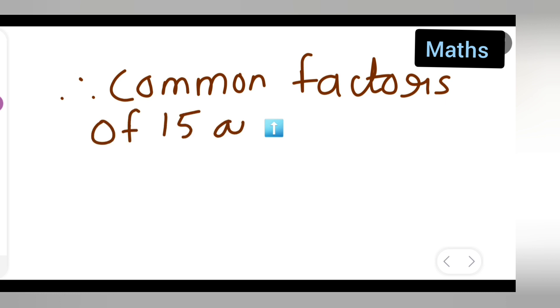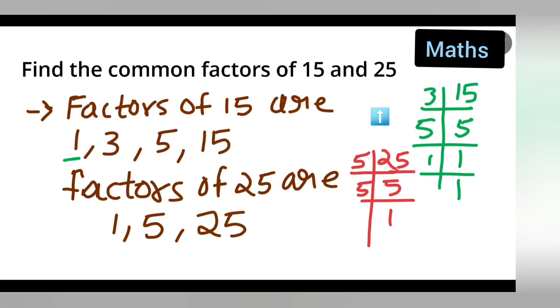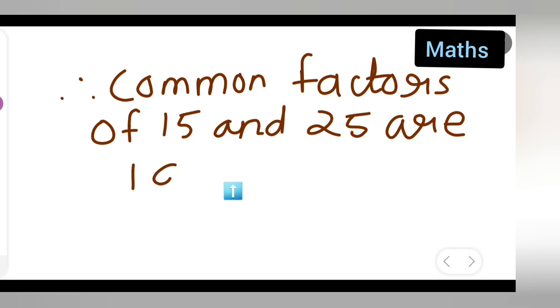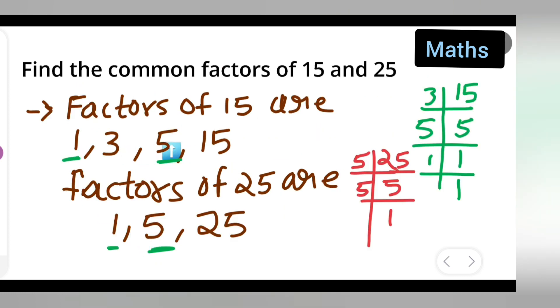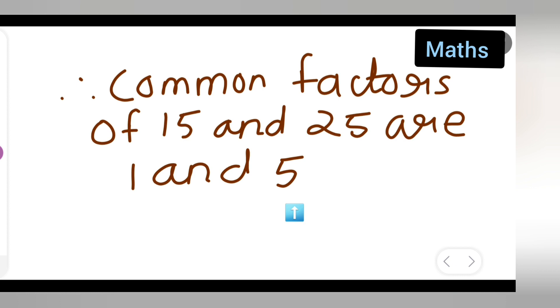So therefore you can write down here: therefore common factors. Now what are the common factors of these two? Common factors of 15 and 25 are... Now what are the common factors in this? So you can see what is common: 1 is common in both, and 5 is common. So you can write down 1 and 5. Okay. Therefore the common factors of 15 and 25 are 1 and 5, because 1 is common and 5 is common. 25 is here but not there. So I hope you have understood how to find the common factors of 15 and 25.